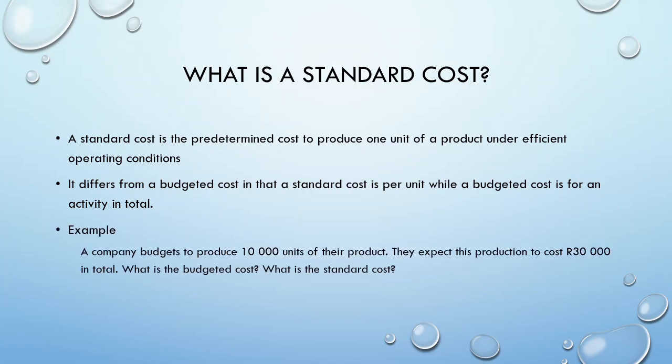In our example, a company plans to produce 10,000 units of some product. They estimate the total cost of this production to be 30,000 Rand. We are asked to determine the budgeted cost and the standard cost. The budgeted cost is 50,000 Rand, because it is the total cost for the production. The standard cost is then the total cost divided by the number of units produced, giving us a standard cost of 3 Rand per unit.